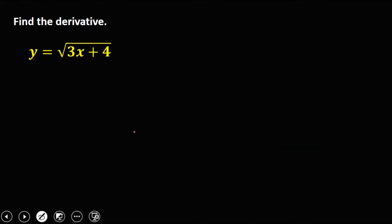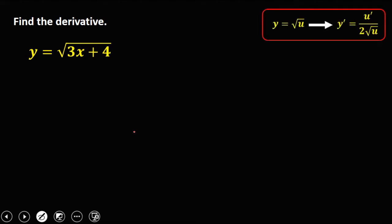So we have this given: find the derivative of y equals square root of 3x plus 4. Using this formula, from the given, u is equal to 3x plus 4. Then to get the derivative of u, that's u prime. The derivative of 3x is 3, and the derivative of 4 is 0, because the derivative of a constant is equal to 0. So therefore, u prime is equal to positive 3.